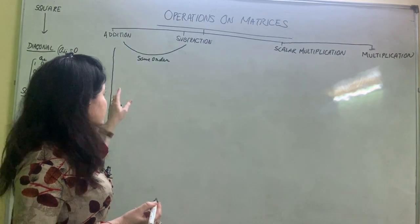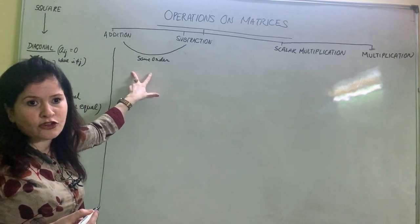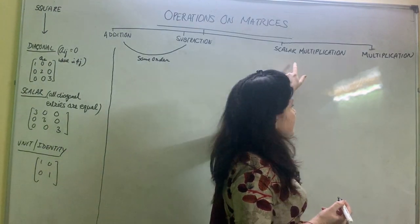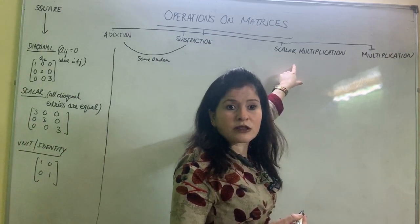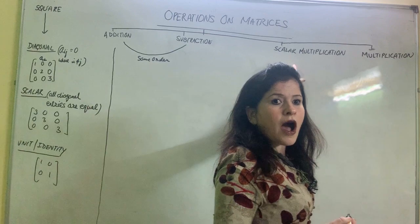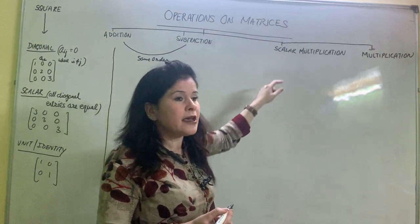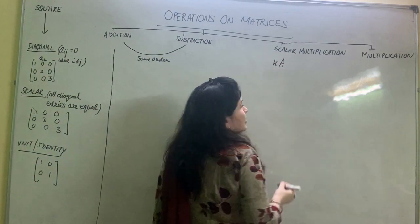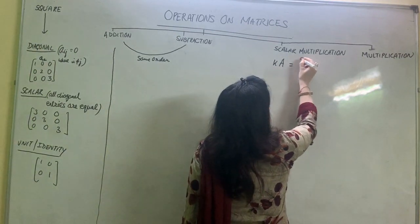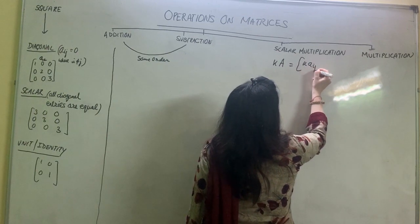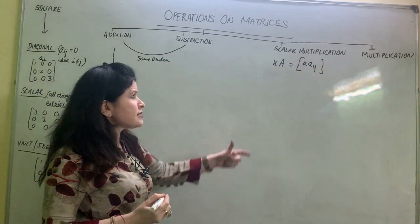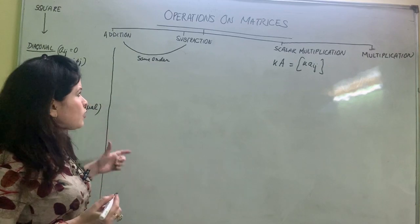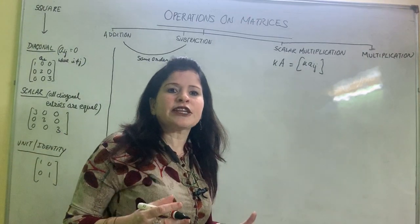Addition and subtraction is done by adding or subtracting the corresponding entries only. For scalar multiplication, if I have to multiply any matrix A with a scalar k, it simply means I am multiplying the scalar k with every entry inside the matrix. Let's quickly do one question which involves all three operations.